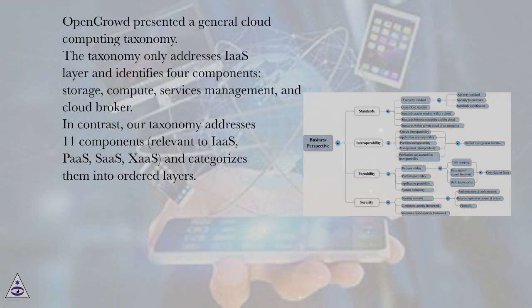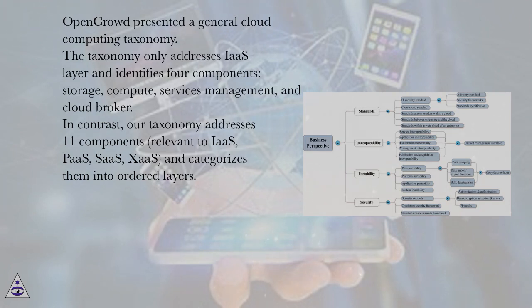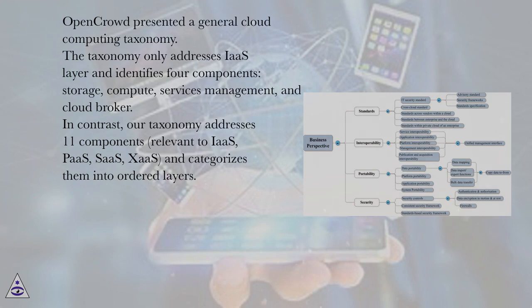OpenCrowd presented a general cloud computing taxonomy. The taxonomy only addresses the IaaS layer and identifies four components: storage, compute, services management, and cloud broker. In contrast, our taxonomy addresses 11 components relevant to IaaS, PaaS, SaaS, and ZaaS, and categorizes them into ordered layers.